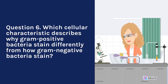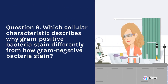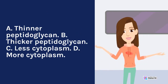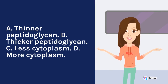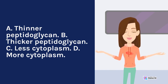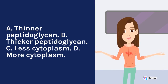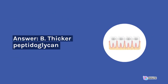Question 6. Which cellular characteristic describes why gram-positive bacteria stain differently from how gram-negative bacteria stain? A. Thinner peptidoglycan. B. Thicker peptidoglycan. C. Less cytoplasm. D. More cytoplasm. Answer: B. Thicker peptidoglycan.